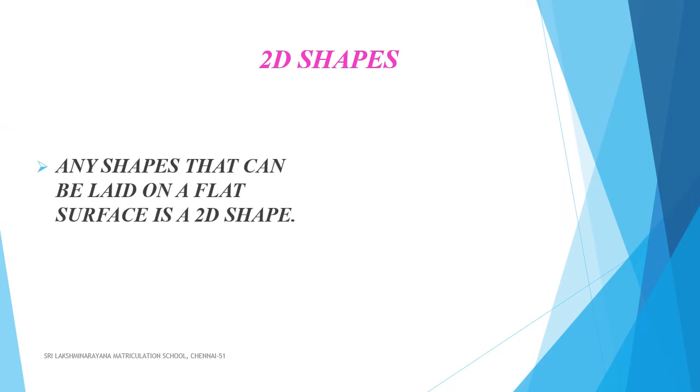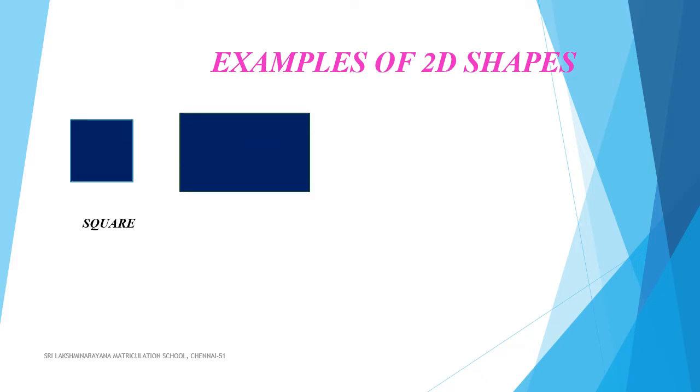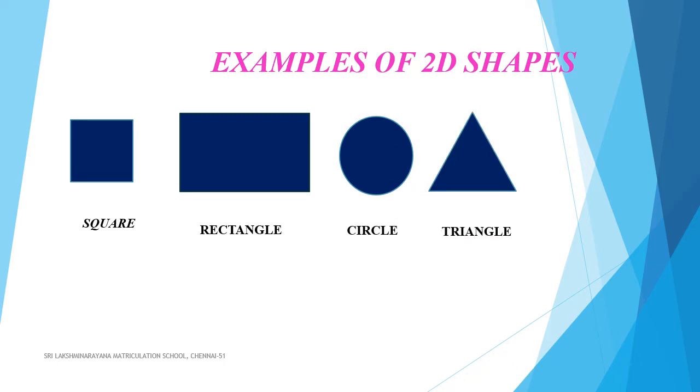Any shapes that can be laid on a flat surface is a 2D shape. There are a number of shapes all around us, but the four basic shapes are square, rectangle, circle and triangle.